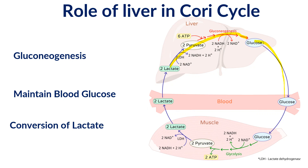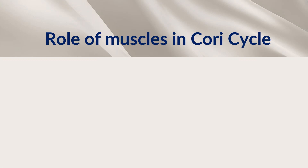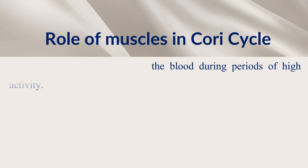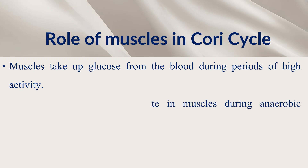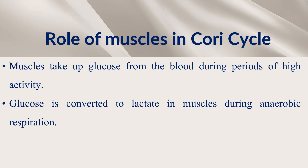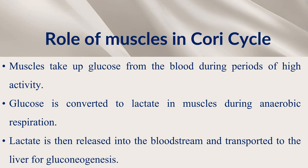The third point for the liver is the conversion and utilization of lactic acid, since it is a dead-end product that must be metabolized. Now, what is the role of muscle in the Cori cycle? Three important points: first, muscle takes up glucose from the blood during periods of high activity. Second, glucose is converted to lactic acid in muscle during anaerobic respiration, providing the muscle with energy. Third, lactic acid is released into the blood circulation and transported to the liver for gluconeogenesis. So muscle uses glucose for energy production, regulates metabolic processes, and removes lactic acid.